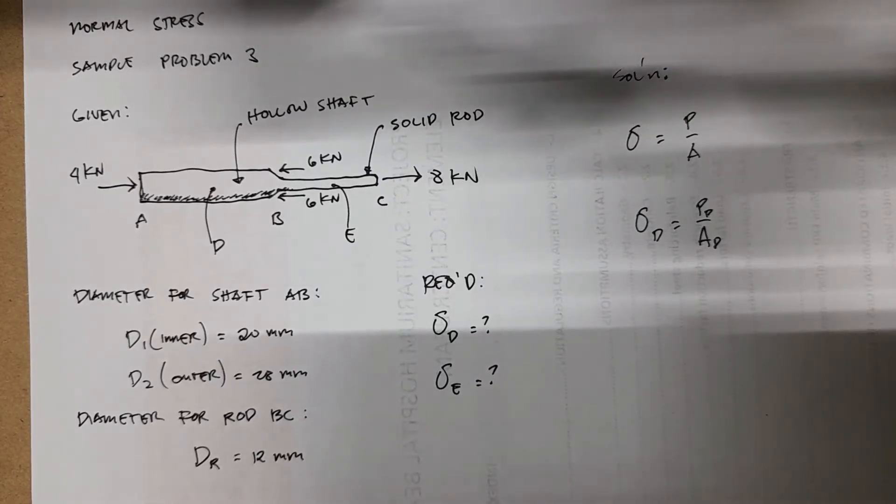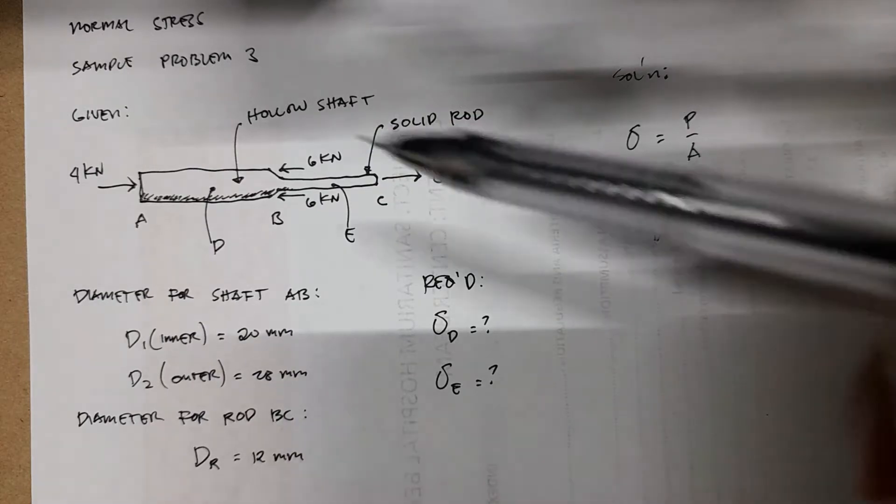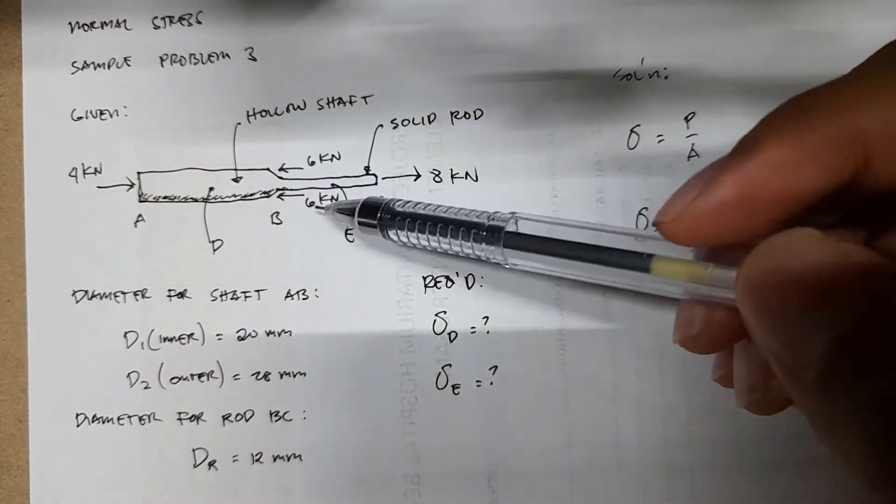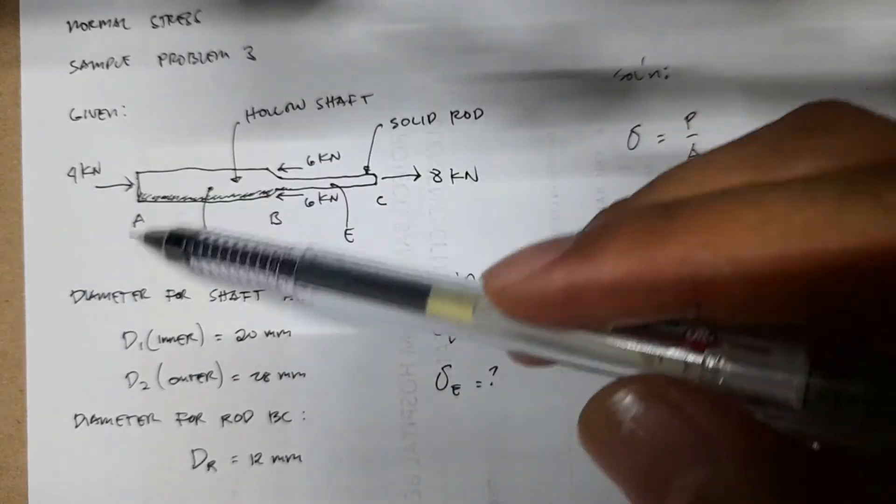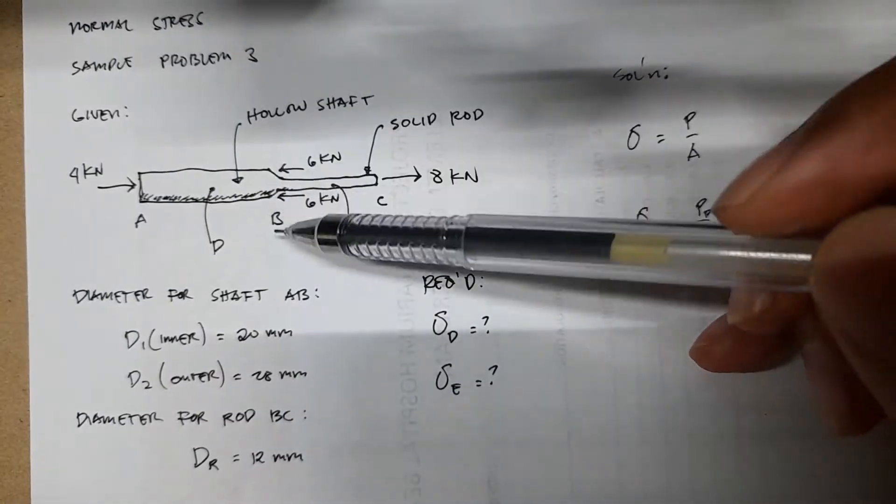Here's another sample problem for normal stress. Here we have a combination of a hollow shaft connected to a solid rod. So the hollow shaft is from point A to B and then the solid rod is from point B to C.